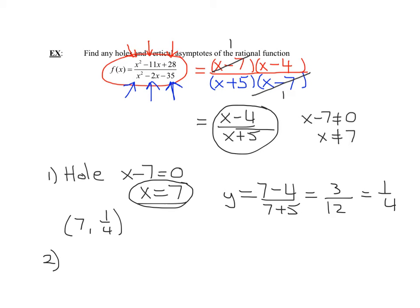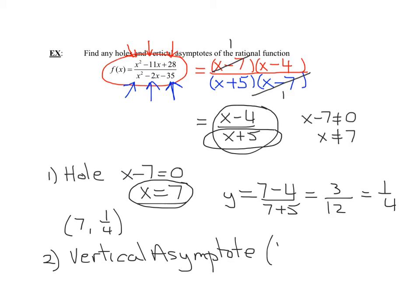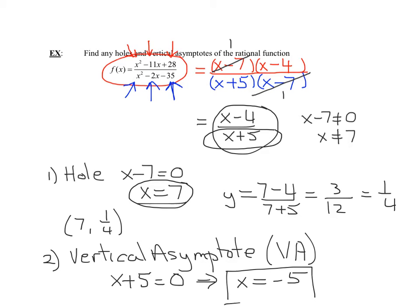Do I have any factors still left in the denominator? Yes, I still have x plus 5, so that means I have a vertical asymptote. I'll write VA for vertical asymptote where the factor in the denominator did not reduce out. Setting x plus 5 equal to zero gives x equals negative 5. Remember, if you're ever asked for a vertical asymptote, it must be an equation of a line — x equals negative 5 is the equation of a vertical line.